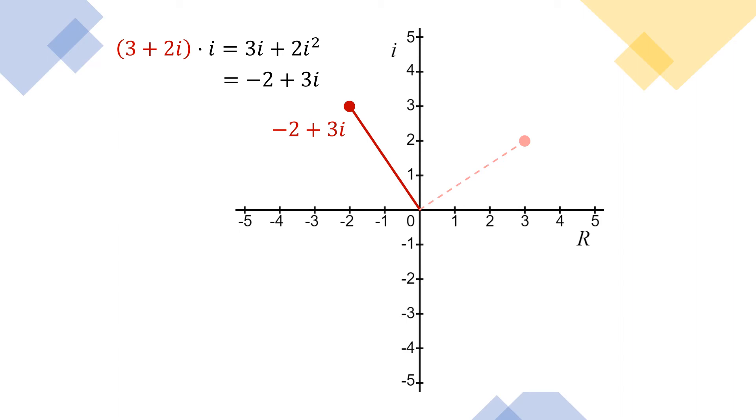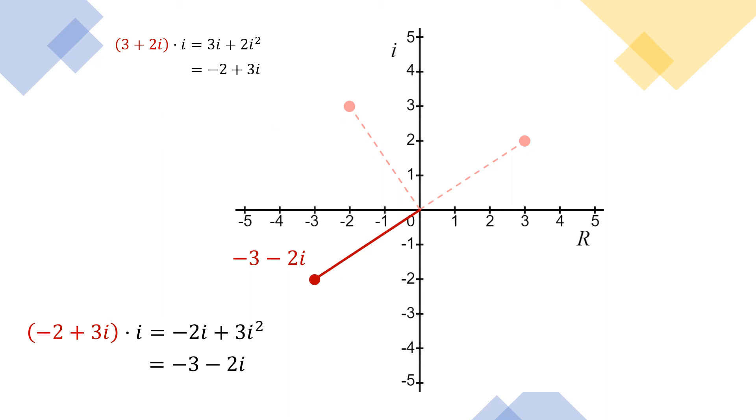So let's take that negative two plus three i and multiply that by i. And we'll get negative two i plus three i squared. And when we simplify that, we'll get negative three minus two i. And plotting that new complex number in the complex plane gives us yet another counterclockwise rotation around 90 degrees.